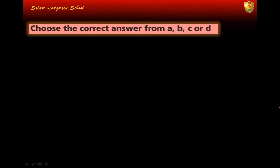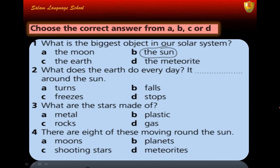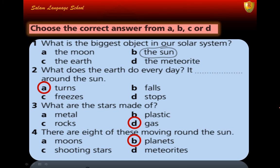The next exercise: choose the correct answer from a, b, c, or d. Number one: what is the biggest object in our solar system? — the answer is the sun, letter B. Number two: what does the Earth do every day? — it turns around the sun. Number three: what are the stars made of? — gas. Number four: there are eight of these moving around the sun — they are planets.